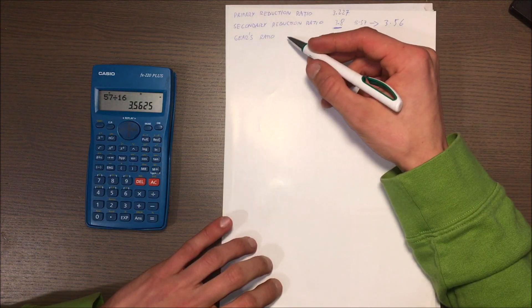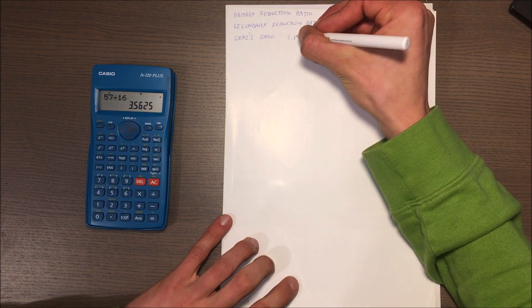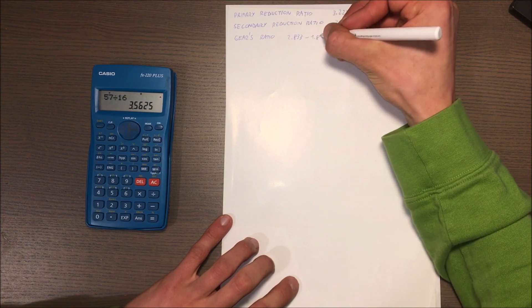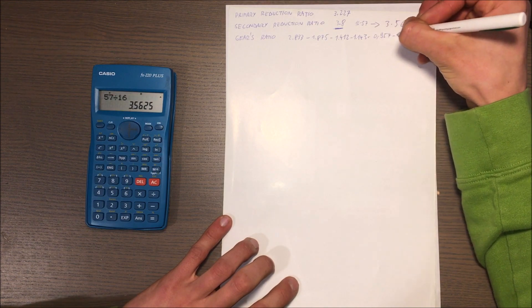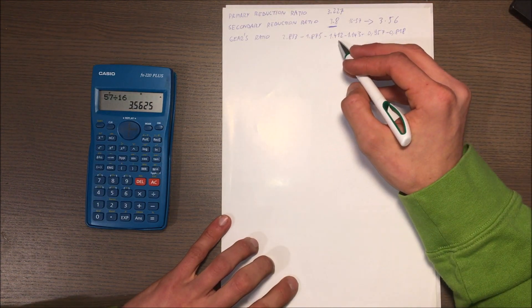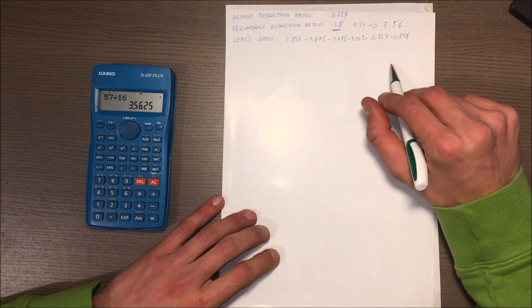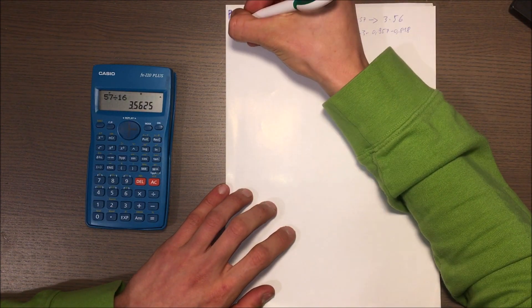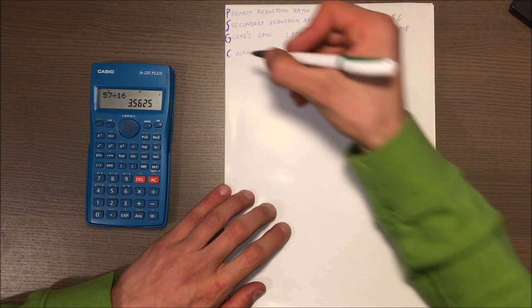The gears ratio is always in the manual. In my case they are 2.833. So these are all the gear ratios. This will be letter P, S, and G.